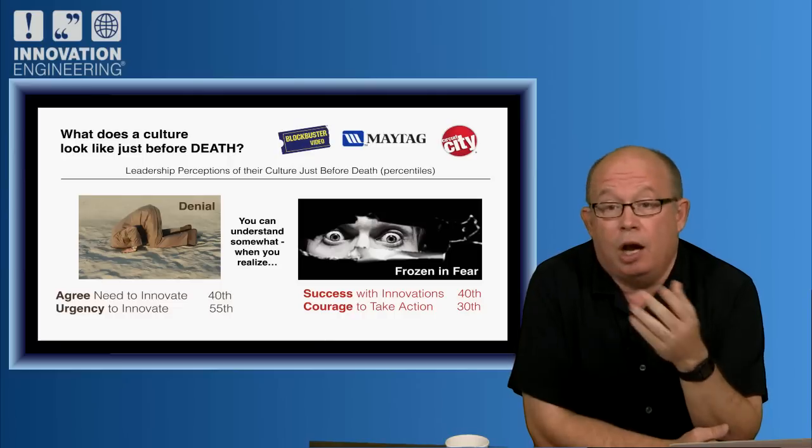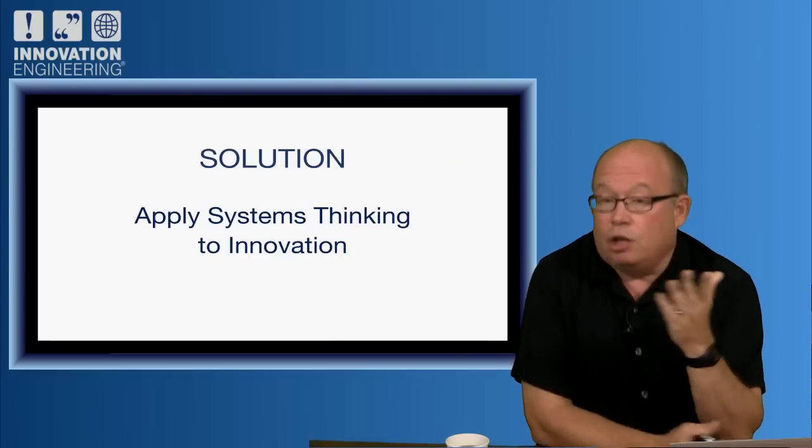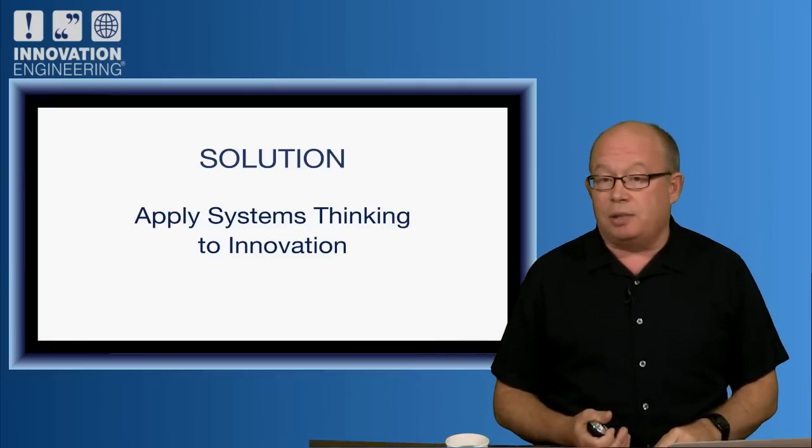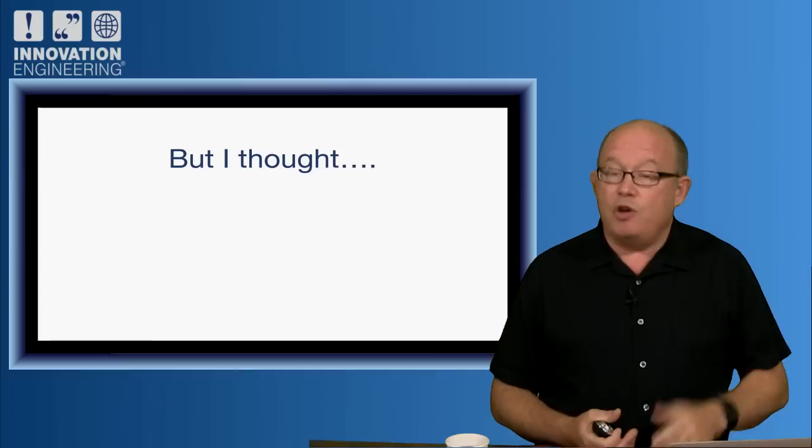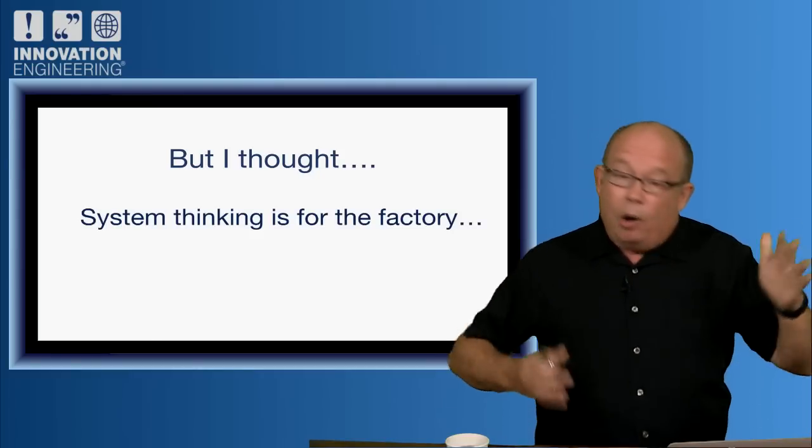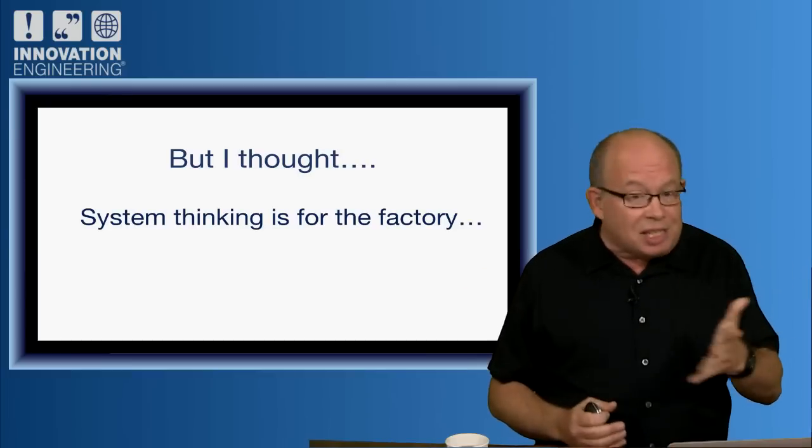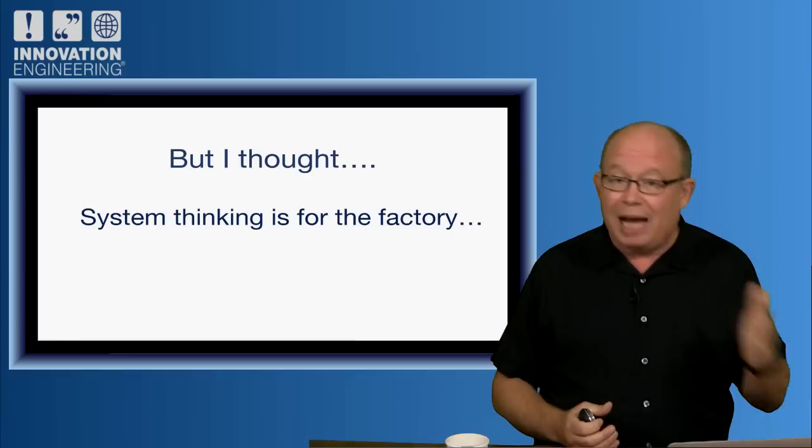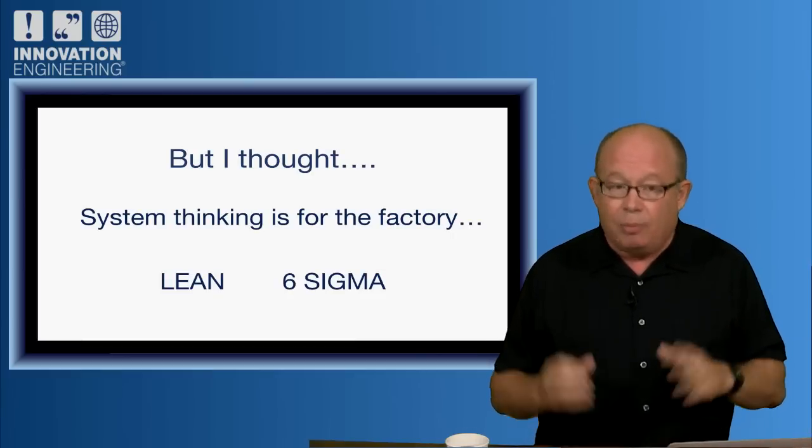Folks, we got to go. We got to go faster. The solution is we're going to have to apply systems thinking to innovation. If you want to go faster in development, you're going to have to apply systems thinking. I know what you're thinking. You're thinking, system thinking, that's for the factory. We got lean, Six Sigma, we're good there.